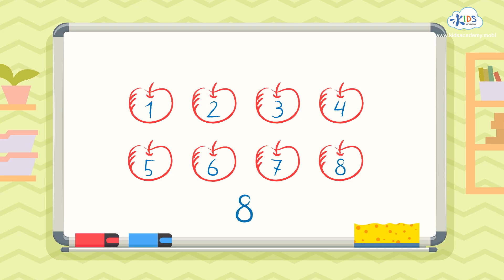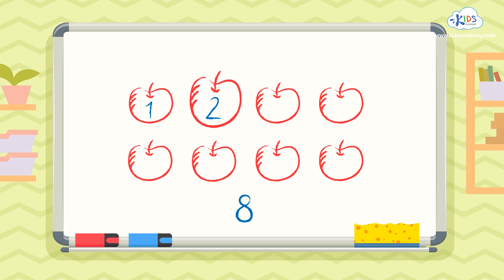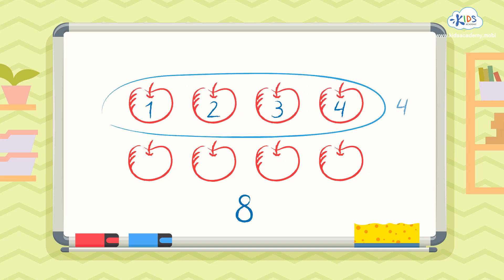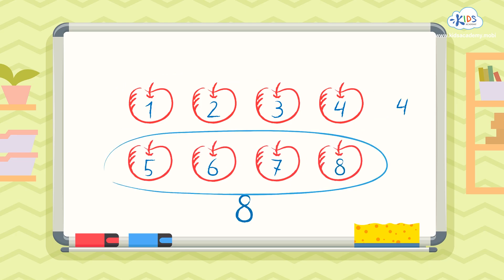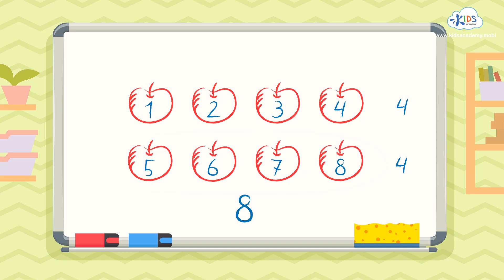This problem can be easily represented in two different addition problems. First, we can count the top row across. One, two, three, four — that's four. And then the bottom row: five, six, seven, eight — and that's four too. Both the top and the bottom rows have four numbers. This problem could be represented by four plus four, and we know that four plus four equals eight.